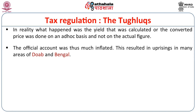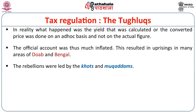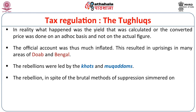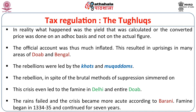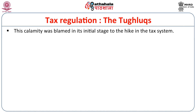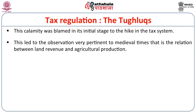This resulted in uprisings in many areas of the Doab and Bengal, led by the khots and mukaddams who faced a grave crisis due to the increased tax system. The rebellion simmered despite brutal methods of suppression. The crisis became even more acute in Delhi and the entire Doab because of a famine — rains failed and the crisis grew more acute. The famine began in 1334-35 and continued for more than seven years. This calamity was initially blamed on the hike in taxes, leading to an important observation about the relationship between land revenue and agricultural production.